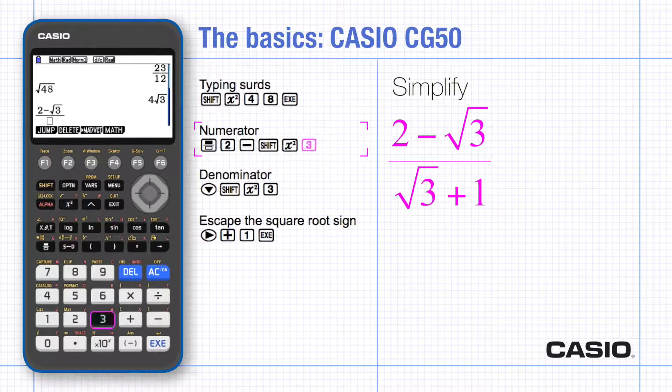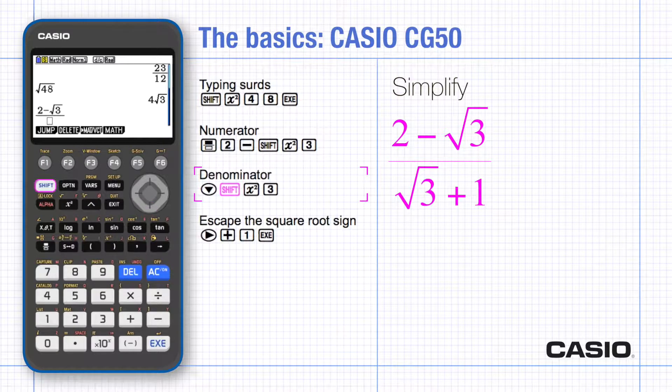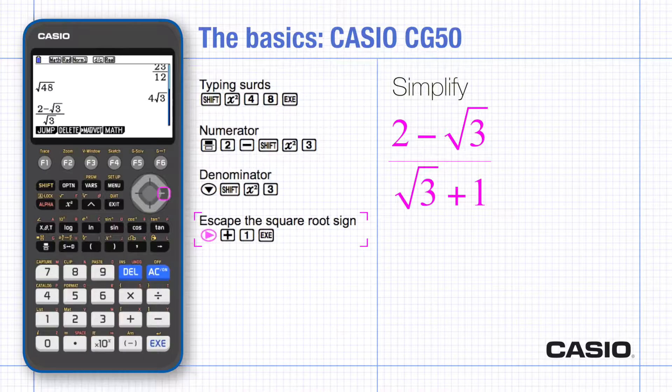And then use the cursor key down to type the denominator. After typing the root 3 you need to scroll to the right to avoid typing the square root of 3 plus 1 and now execute.